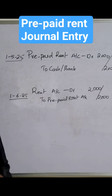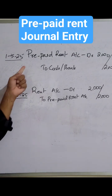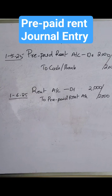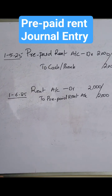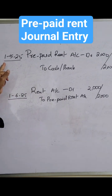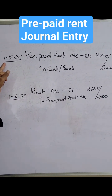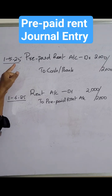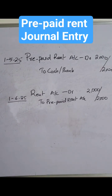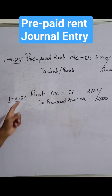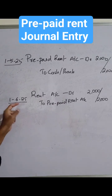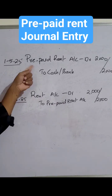Now we'll see the example of rent — how to write the prepaid rent entry. So, for example, we have paid rent in advance on May 1, 2025, meaning we have paid the rent of June in advance.